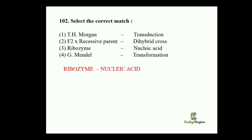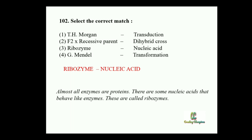Because ribozyme is a catalytic RNA which is a nucleic acid, and these nucleic acids behave as an enzyme. T.H. Morgan is a Nobel Prize winner who proposed the chromosome theory of heredity. F2 generation crossed with the recessive parent is not a dihybrid cross. And Gregor Johan Mendel is the father of genetics. So the correct match for this question is ribozyme — nucleic acid.